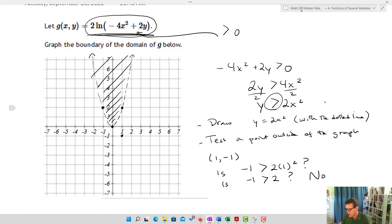Don't forget: do you have a dotted line, do you not have a dotted line? That's important. And then we'll test a point to figure out whether or not we're going to go inside of the graph or outside of the graph. And that's what we're looking to do when we're graphing the boundary of a domain.